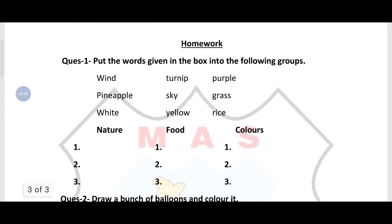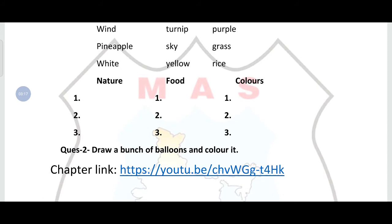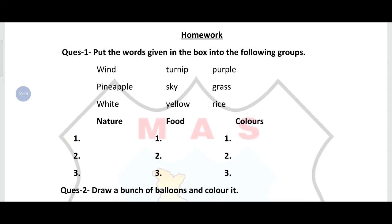Now there is some homework for you. Put the words given in the box into the following groups. We have done in book. Nature. Nature we can write wind. We can write sky. We can write grass. We can write rice. Okay.